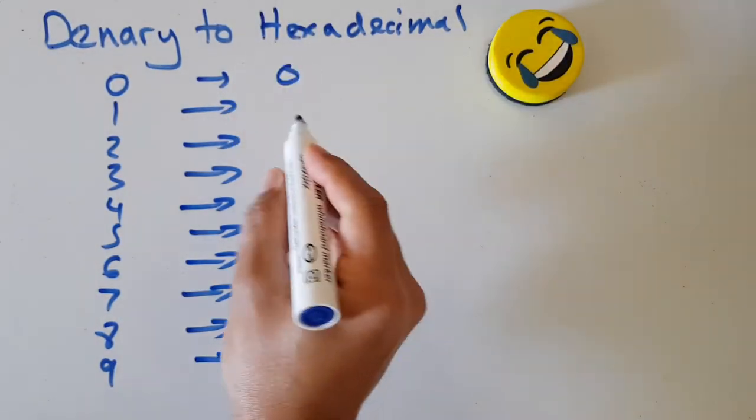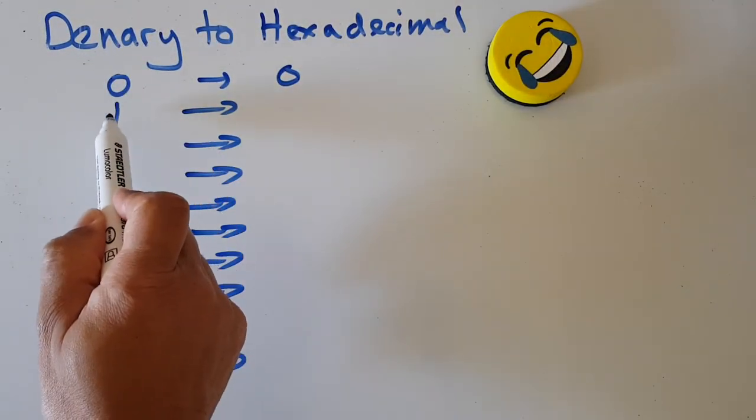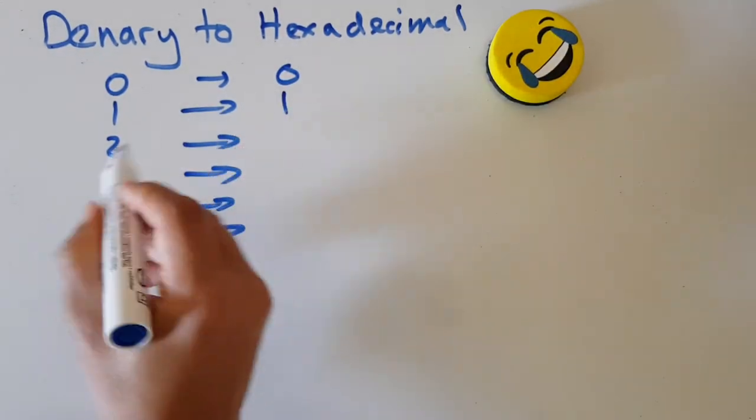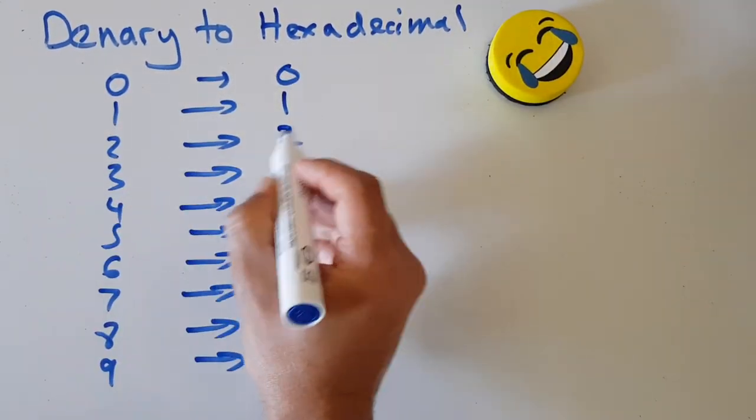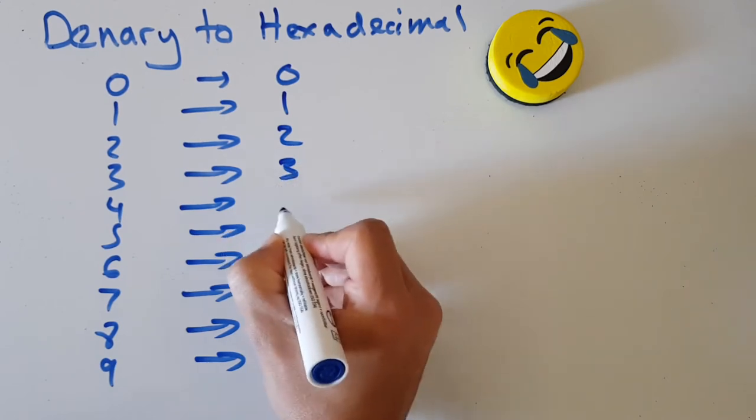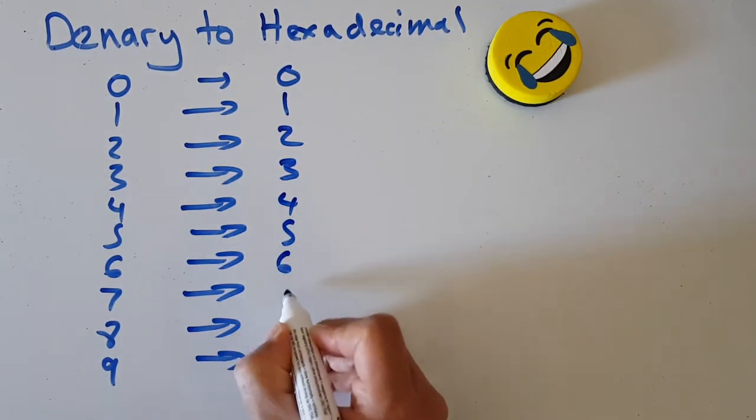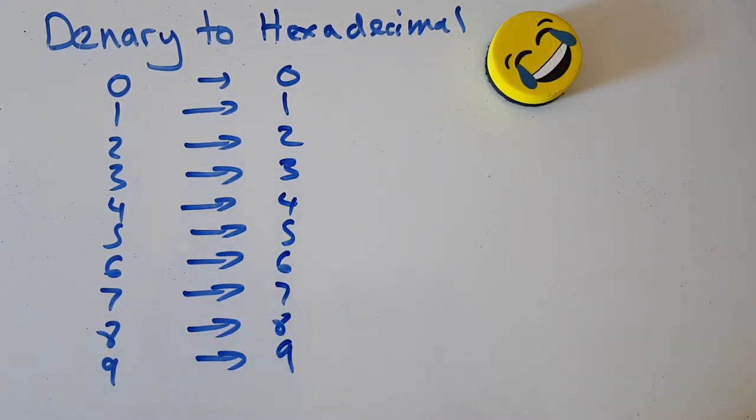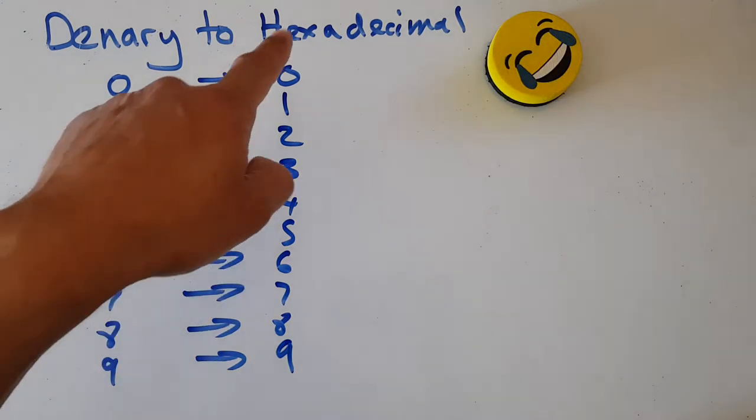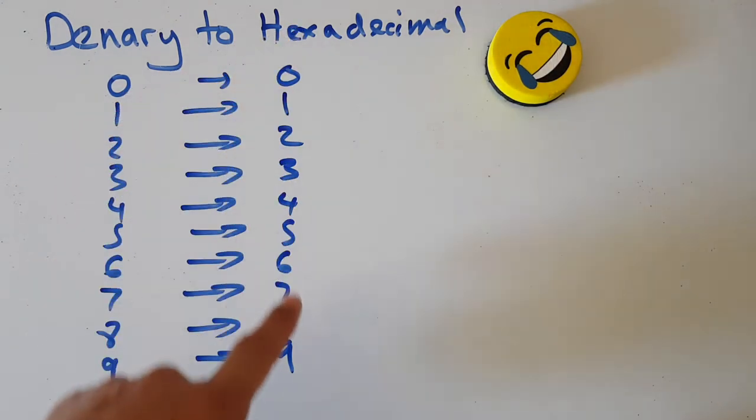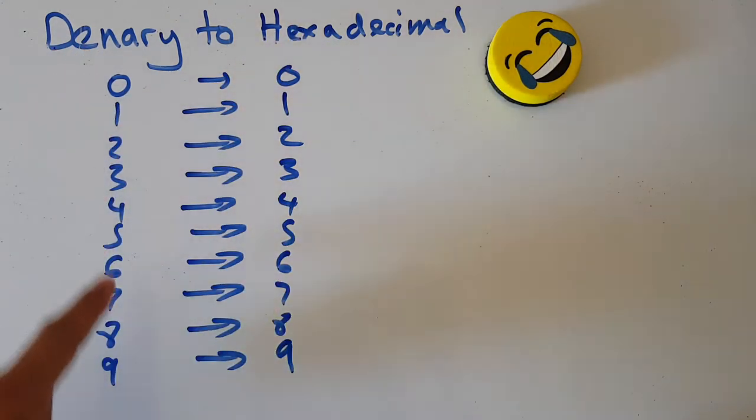What's denary one converted to hexadecimal? Well, that's one. Denary two is two, denary three is hex three, four, five, six, seven, eight, nine. So hexadecimal nought to nine is the same as denary nought to nine.